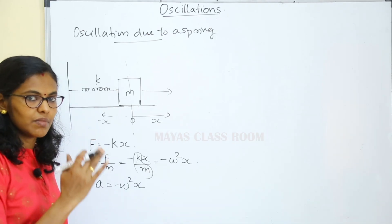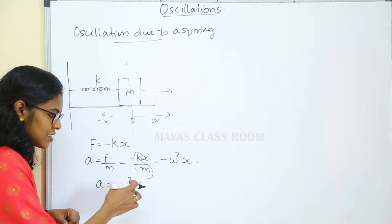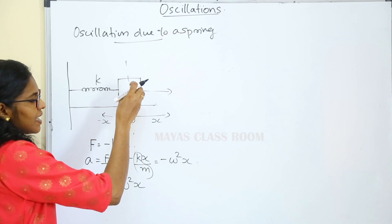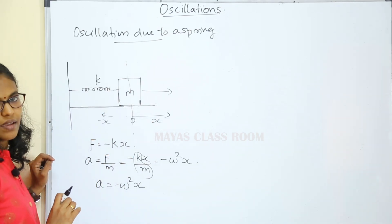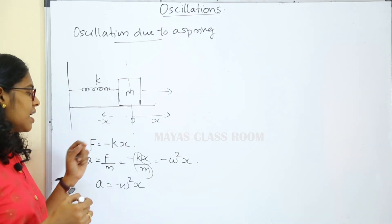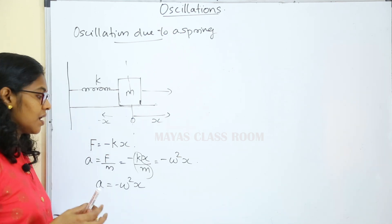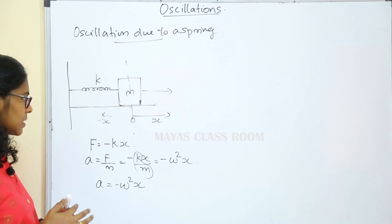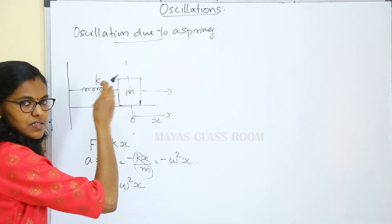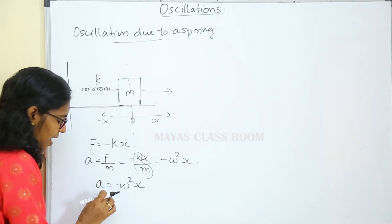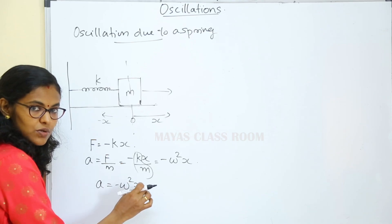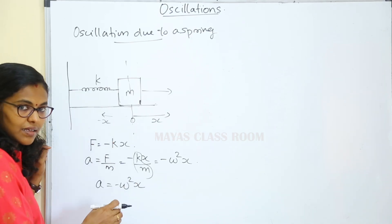We are learning Simple Harmonic Motion in class. Acceleration is directly proportional to displacement — that is Simple Harmonic Motion. In this spring system, there is simple harmonic motion. If we apply a force to the body and release it, simple harmonic motion is executed. Acceleration a equals minus omega squared into x; acceleration is directly proportional to displacement. Therefore, this is simple harmonic motion.